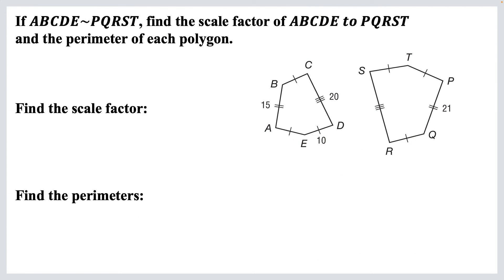Here's another problem. If ABCDE, this has 5 sides, is similar to PQRST, we need to find the scale factor of ABCDE, that's the left one, to PQRST, that's the one on the right. So they're telling us now, they want the scale factor of the one on the left to the one on the right, and then the perimeter of each polygon. So first we need to find the scale factor. And in order to do that, we have to find the matching sides.